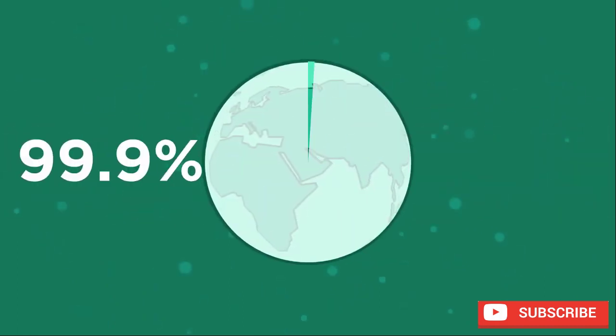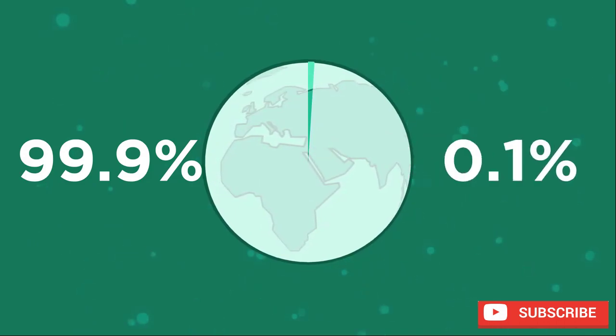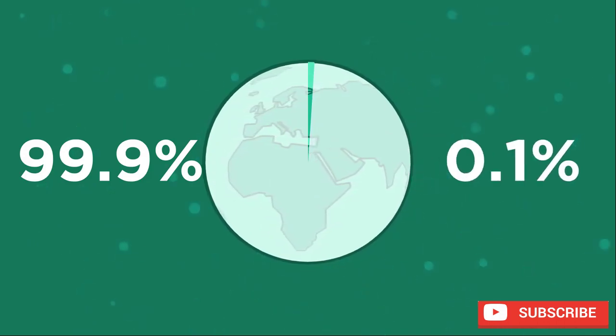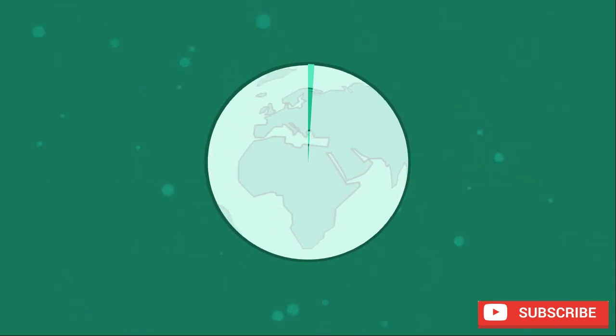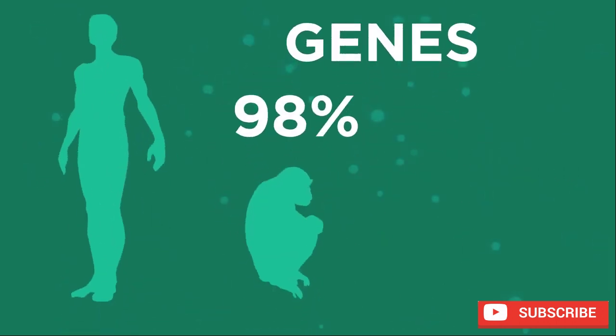The genome of every person on earth is 99.9% the same. It's that tiny 0.1% that makes up genes that give us our unique differences. In fact, our genes are 98% similar to a chimpanzee's and 75% the same as a mouse.